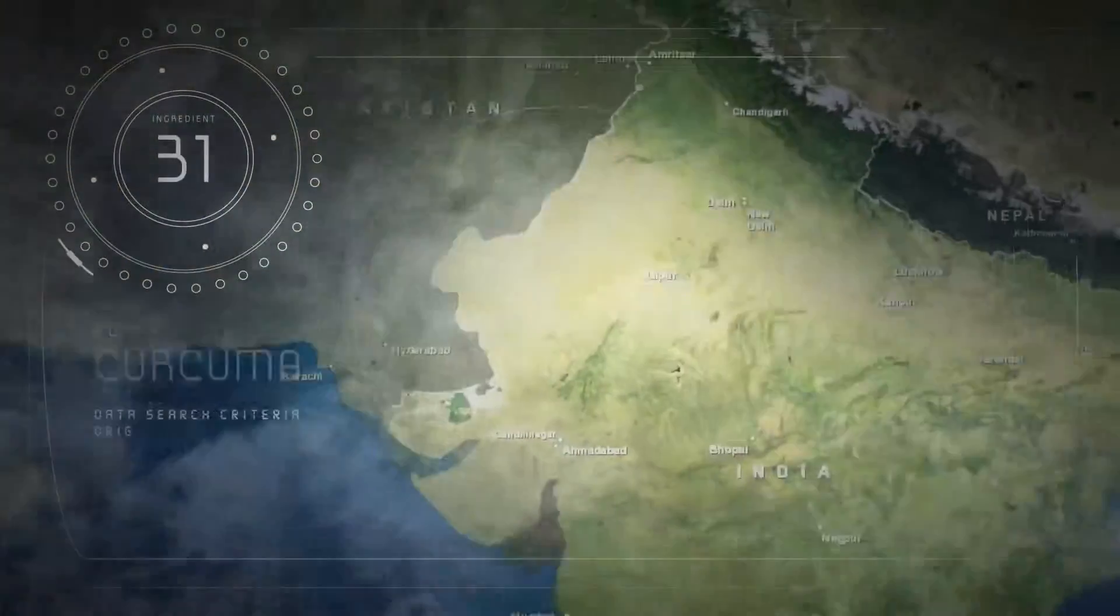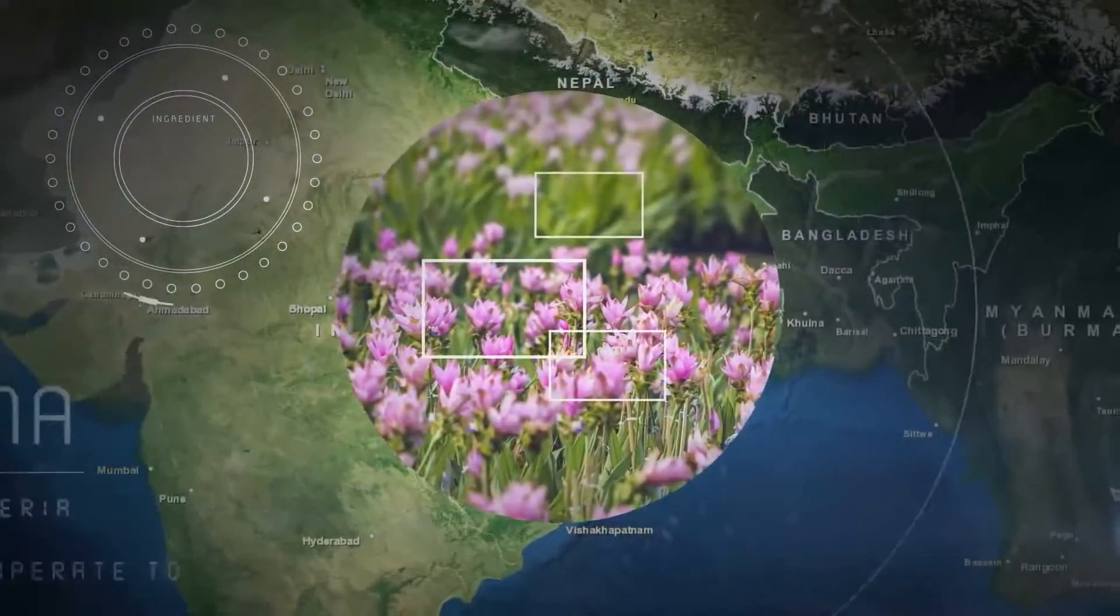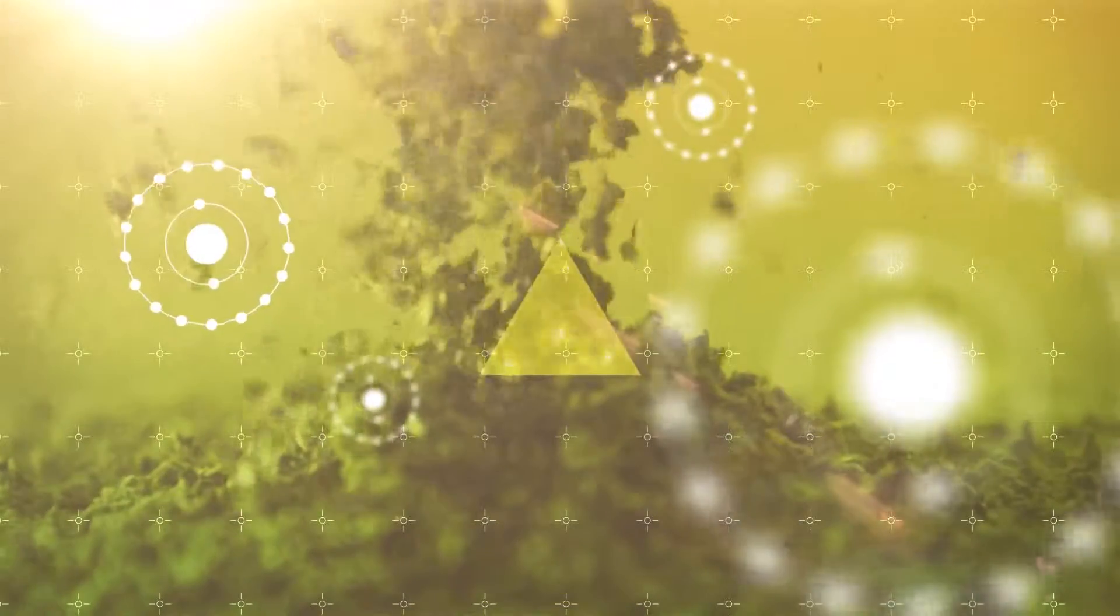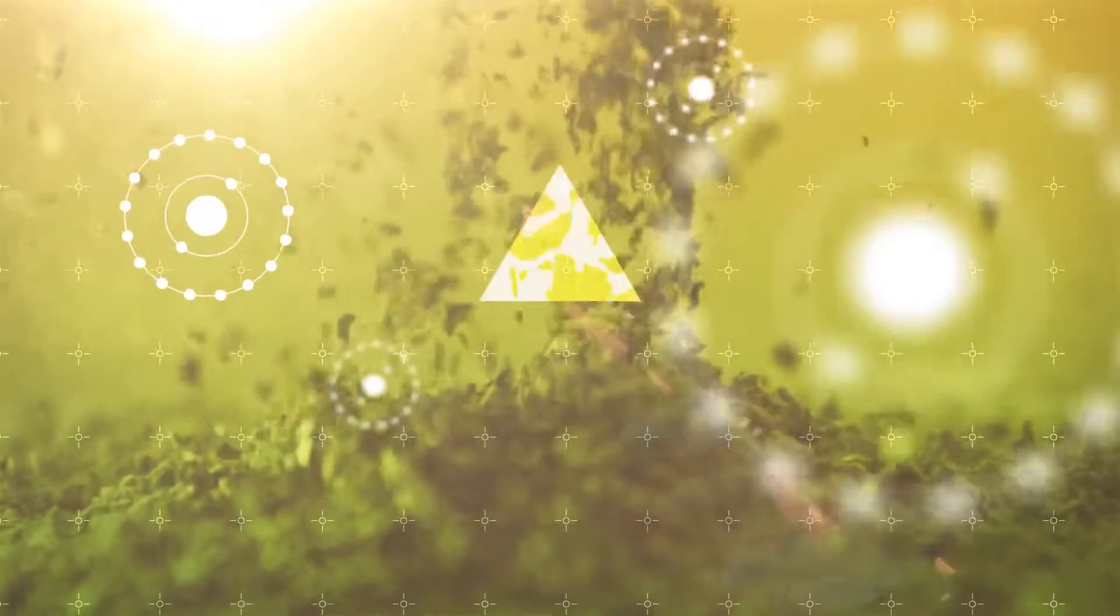Curcuma, grown in tropical India. White tea, harvested from the ancient hills of China. White tea is the least processed tea and has high antioxidant levels.